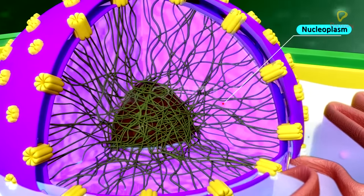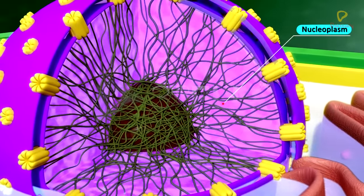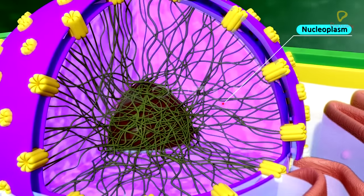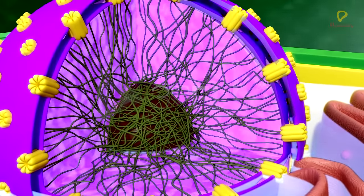Nucleoplasm. The nucleus is filled with transparent, granular, homogeneous fluid called nucleoplasm or karyoplasm.